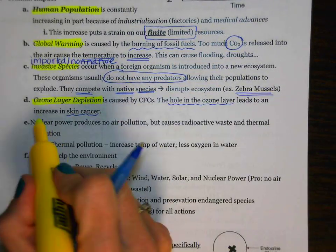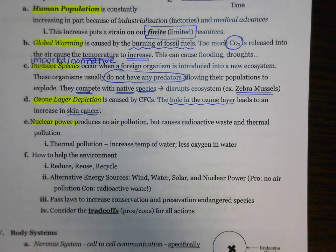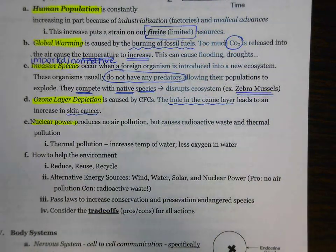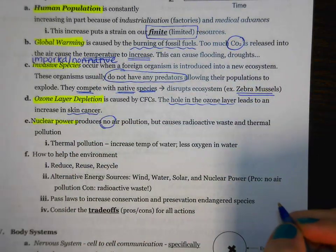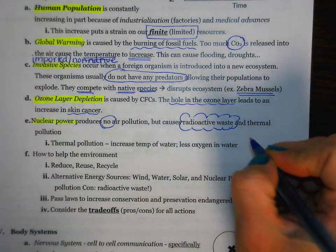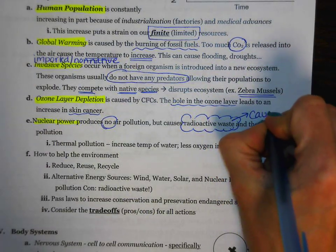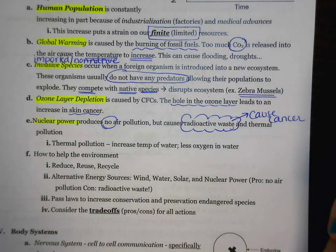Next up, we have nuclear power. Nuclear power is good because it produces no air pollution. Remember, fossil fuels lead to global warming, but with nuclear power there's no air pollution — that's a big positive. However, the negative is that the waste is going to be radioactive. Anything that's radioactive can potentially cause cancer, so the waste products of a nuclear power plant could cause cancer in humans and other organisms.